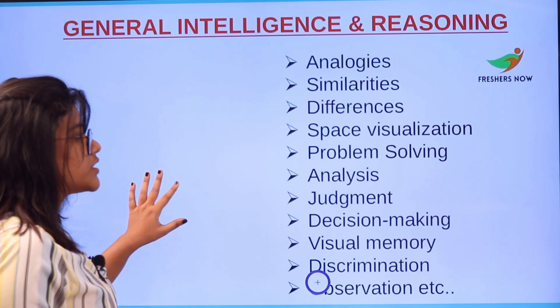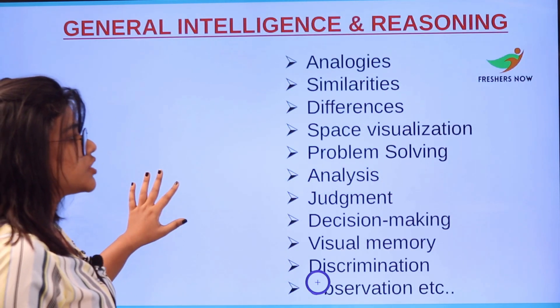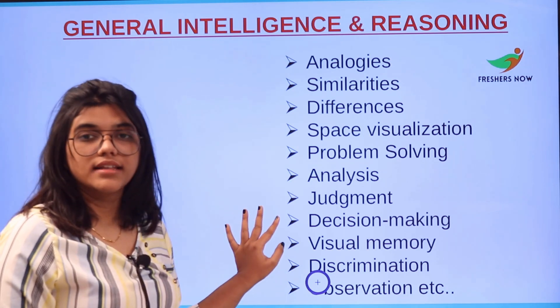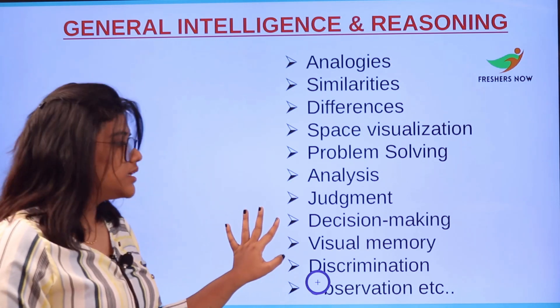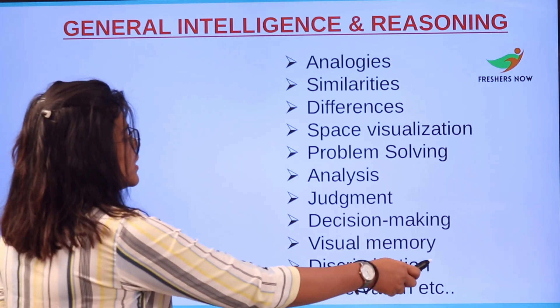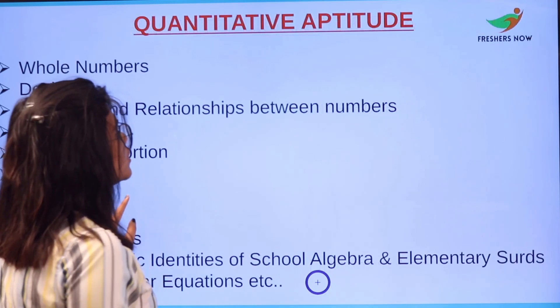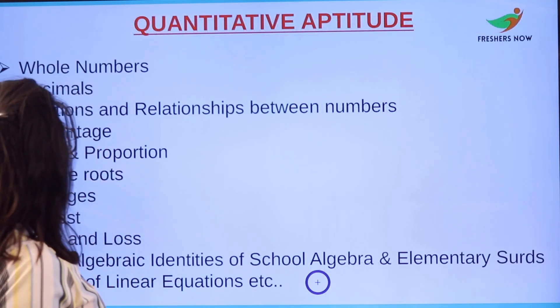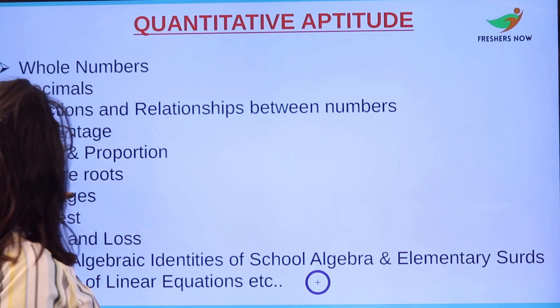The Part 1 syllabus is as follows. For General Intelligence and Reasoning, topics include similarities, differences, space visualization, problems, following analysis, judgment, decision making, visual memory, and discrimination.